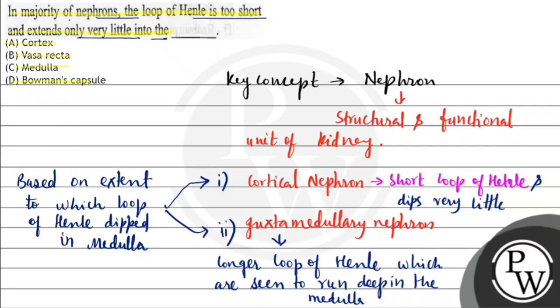Where does it dip? In medulla. Cortical nephron is short and dips very little in the medulla region, so C will be the correct answer. Hope you understood the question, thank you.